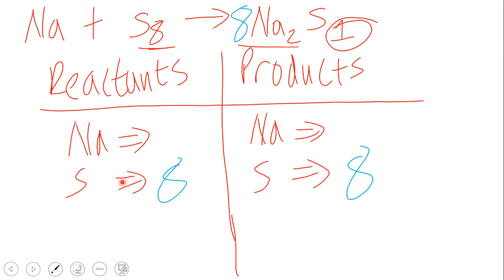So on the reactant side we'll have sixteen, but on the product side we only have one. So we have to increase that, so it's going to be sixteen.